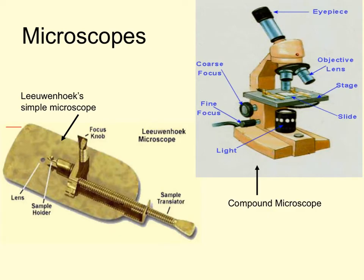So far we've talked about two microscopes: Leeuwenhoek's single lens microscope and the compound microscope. Today we have the compound light microscope — I won't go into a lot of detail because you'll see a video specifically on it. Just know that the single lens microscope was Leeuwenhoek's, and Robert Hooke basically modified the compound microscope into what we use today.